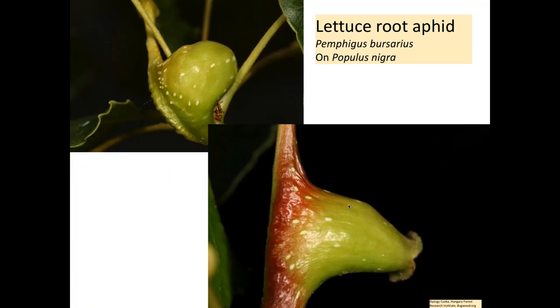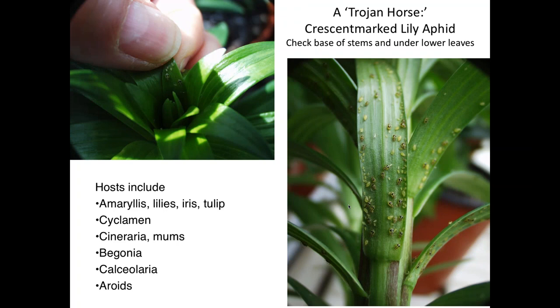The lettuce root aphid makes galls on Populus nigra — one variety called Lombardy poplar is fairly common in some areas of the country. A few years ago we had a real problem with crescent-marked lily aphid, which I believe was brought in on the bulbs. It was very early in spring, no other sources of aphid in the greenhouse, and you can see the dark markings on those aphids in a mixed population with foxglove aphid. This one has a very wide host range, almost as wide as green peach aphid, so there's concern it could spread around to other plants in the greenhouse.